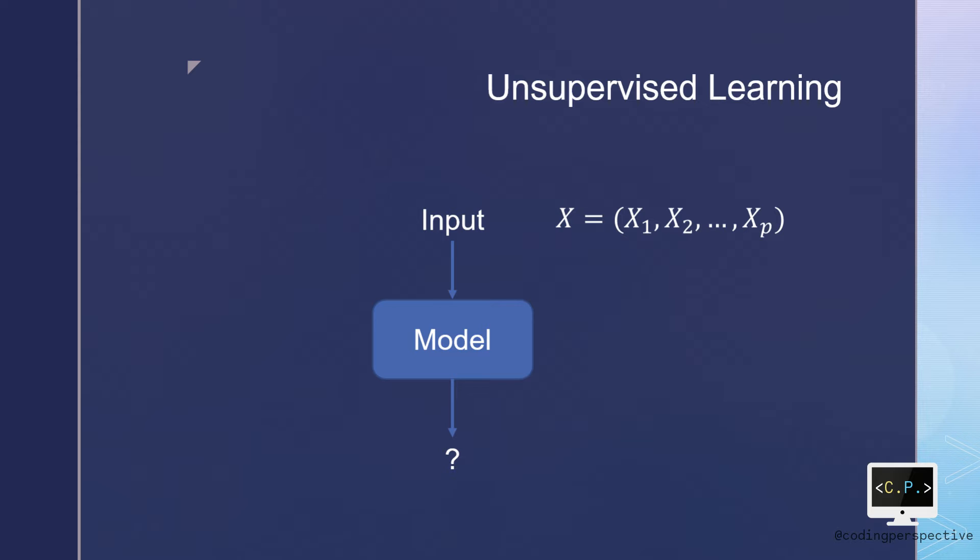This time, we again have our data points, however, without y-values. So there is no associated y-value in our dataset. In this setting, we are in some sense working blind. This is referred to as unsupervised because we do not have a response variable that can supervise our analysis. What we do is seek to understand the relationships between the variables or between the observations.